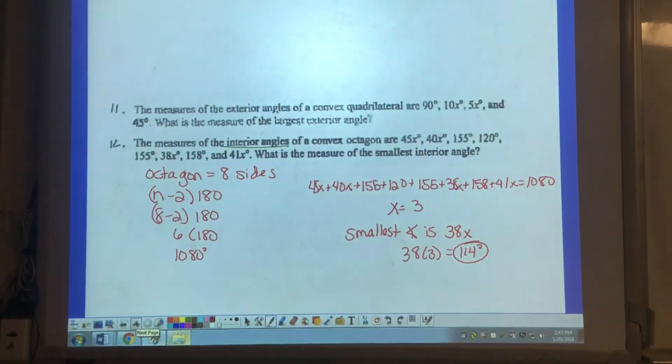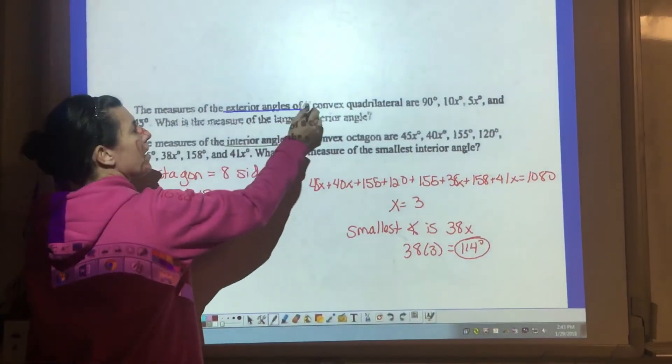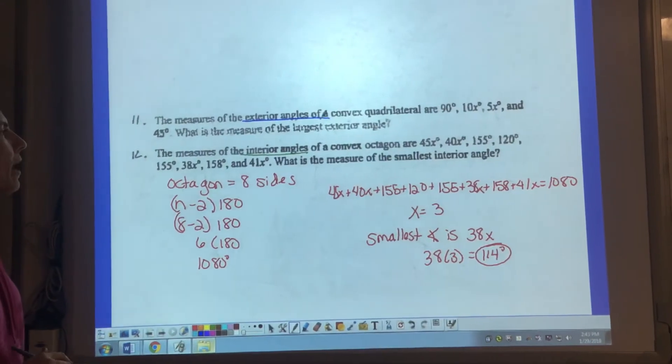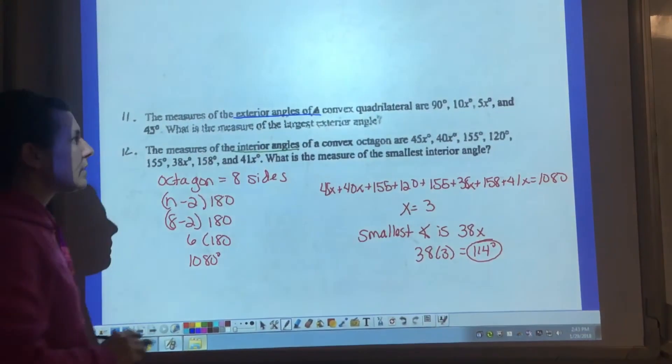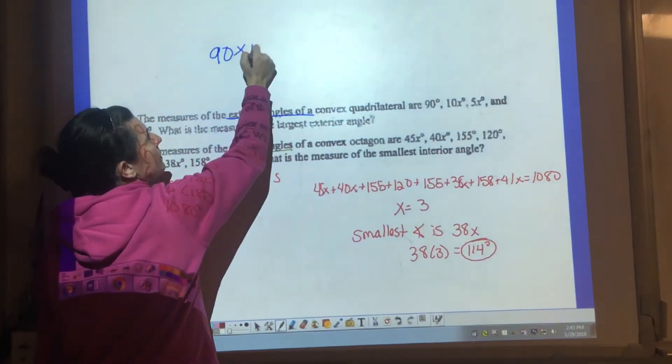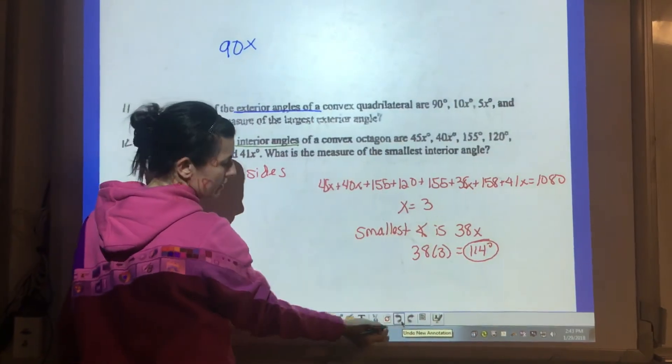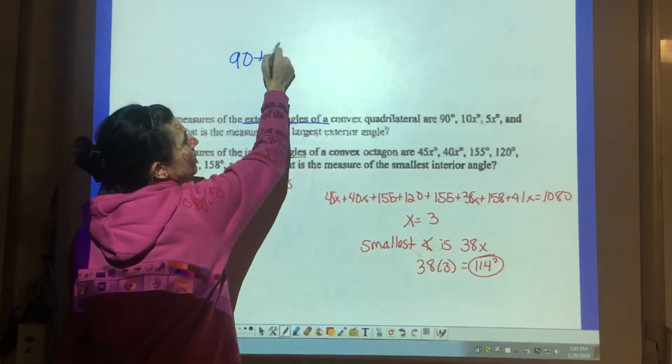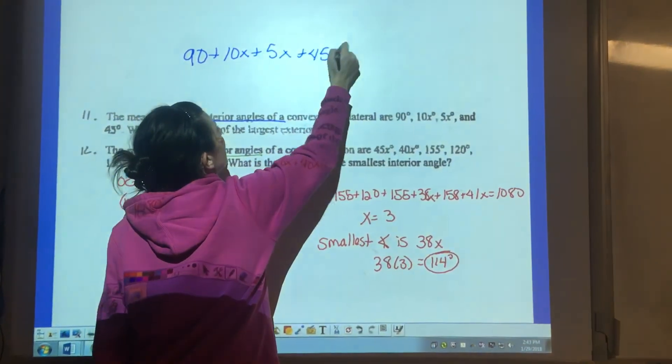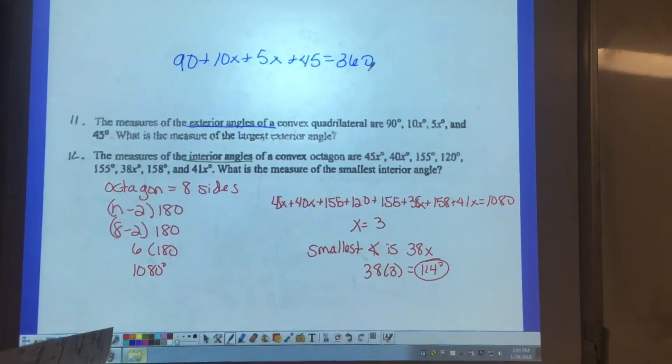11 and 12. Same idea. We're using that same formula. Number 11 says the measures of exterior angles of a quadrilateral are 90, 10x, 5x, and 45. They want the measure of the largest exterior angle. So we're going to set these equal to 360 because we know 90 plus 10x plus 5x plus 45 equals 360 because they are exterior angles. When you solve this equation, x is 15.